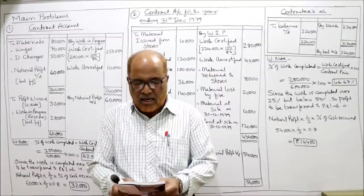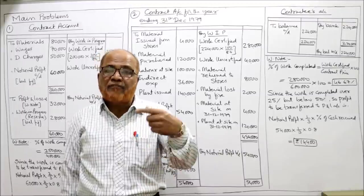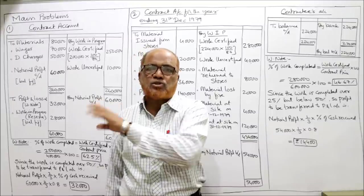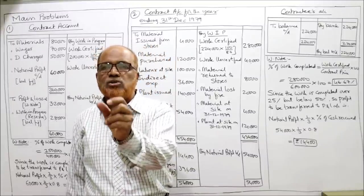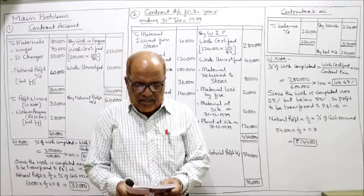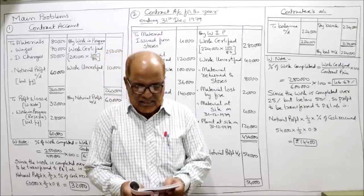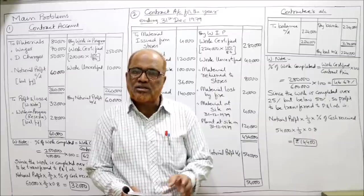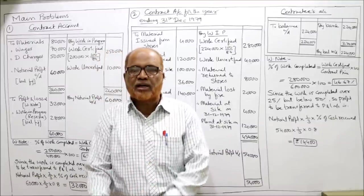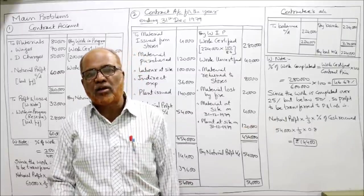Cash received on account up to 31st December amounted to 2,24,000, representing 80% of work certified. Again, work certified is not given — we calculate it as cash received × 100 ÷ 80: 2,24,000 × 100 ÷ 80 = 2,80,000. The remaining 20% is retained until completion — this is called retention money. Work finished but not certified (uncertified work) is 40,000. We need to prepare the contract account and determine how much profit should be credited to P&L.